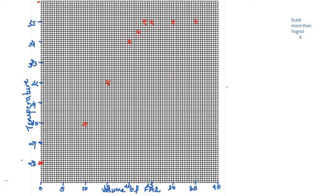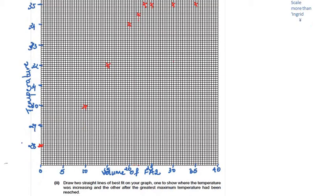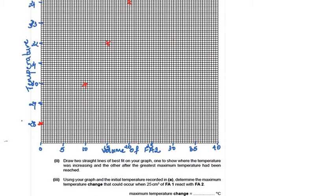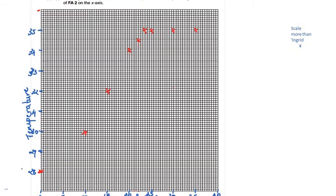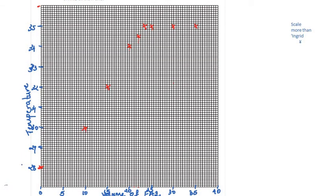Now draw a best fit line from all these points to get two straight lines. The question says: draw two straight lines of best fit on your graph — one to show where the temperature was increasing, and another after the greatest maximum temperature had been reached. Using your graph and the initial temperature recorded, determine the maximum temperature change. Let's first draw the two best fit lines from the plotted points.